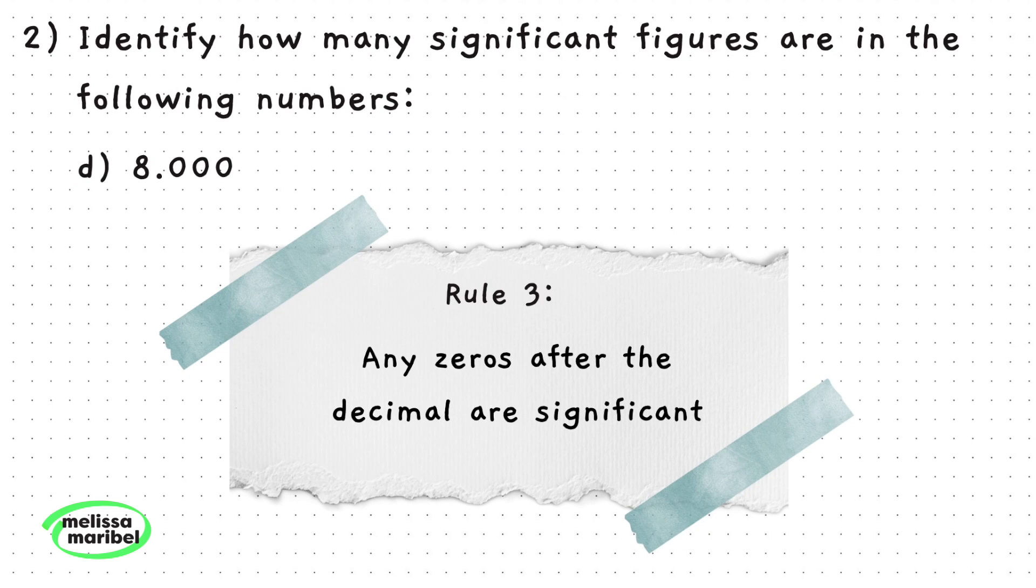Part D follows rule 3, where any zeros after the decimal count as sig figs, so all numbers count as sig figs.